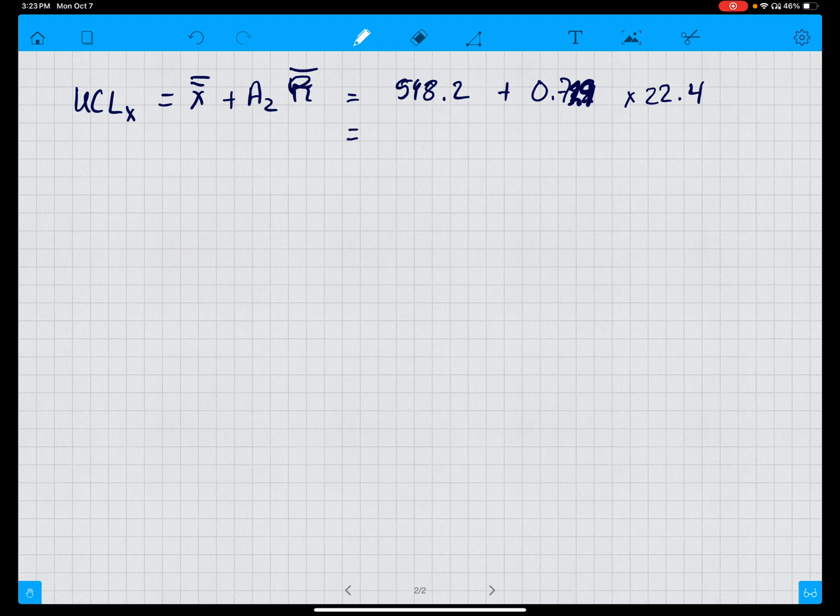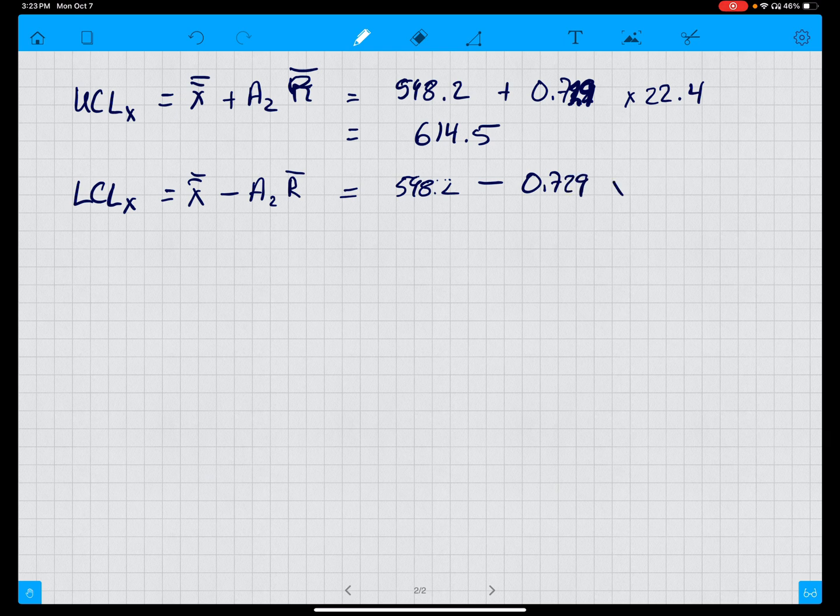That equals 614.5. The lower control limit for X is equal to X-bar-bar minus A2 times R-bar, is equal to 598.2 minus 0.729 times 22.4, equals 581.9.